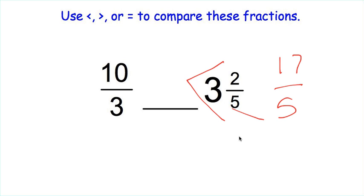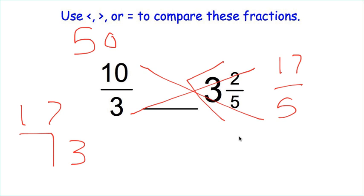So we're going to do our crisscross. 5 times 10 is 50. And then we need to do 3 times 17. Do our lattice box here. 7 times 3 is 21.